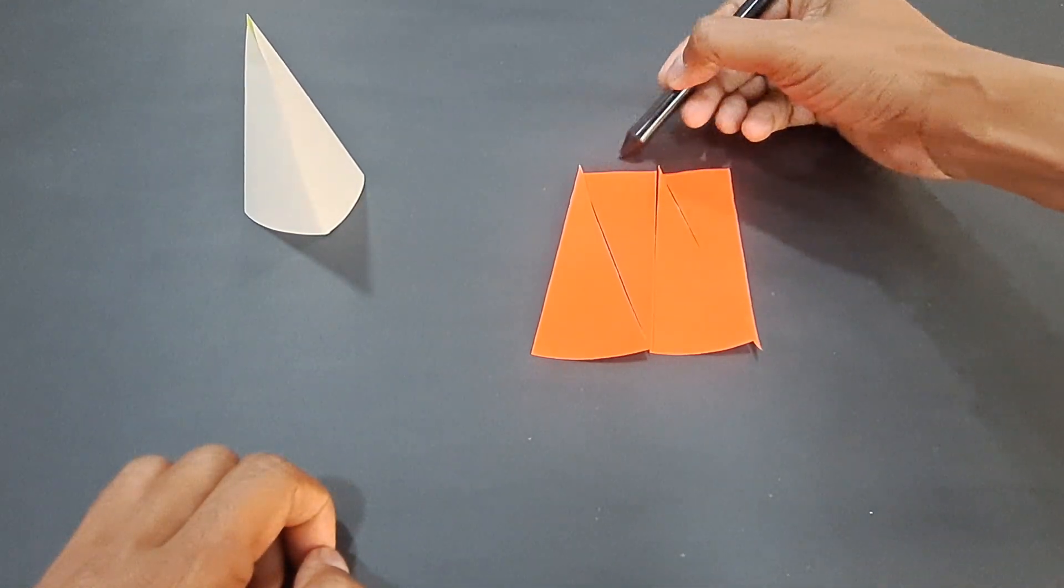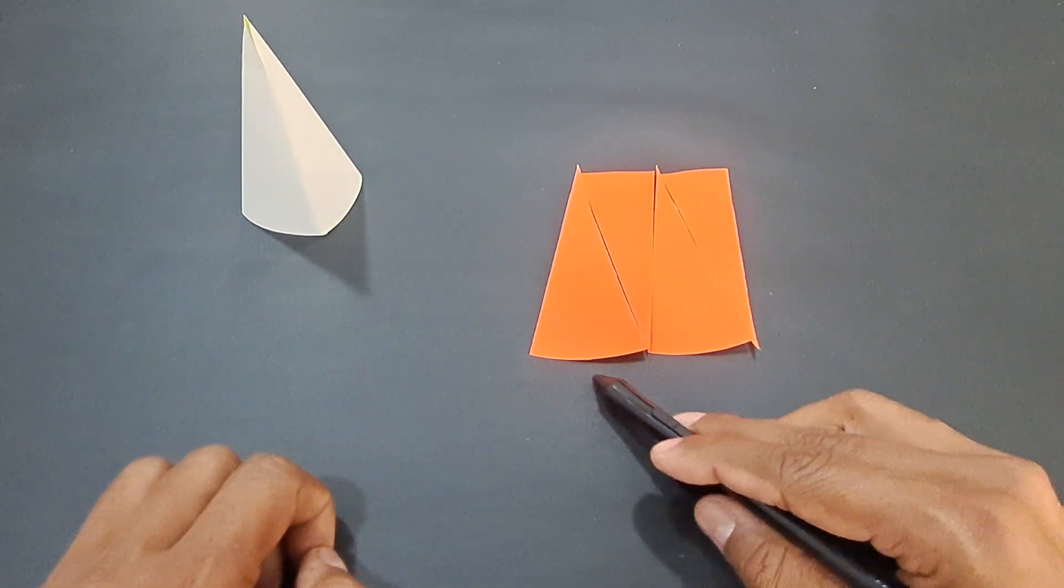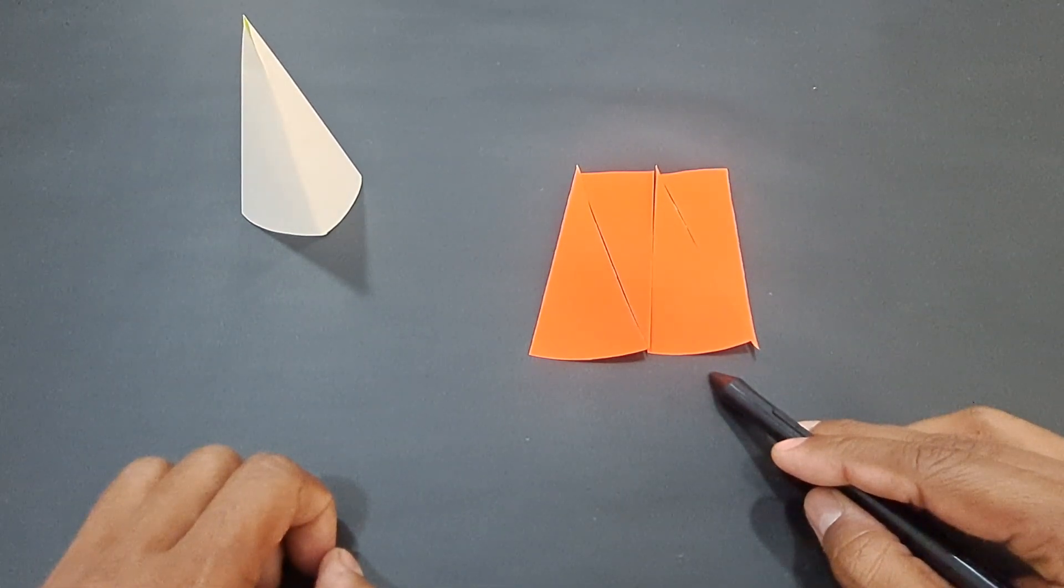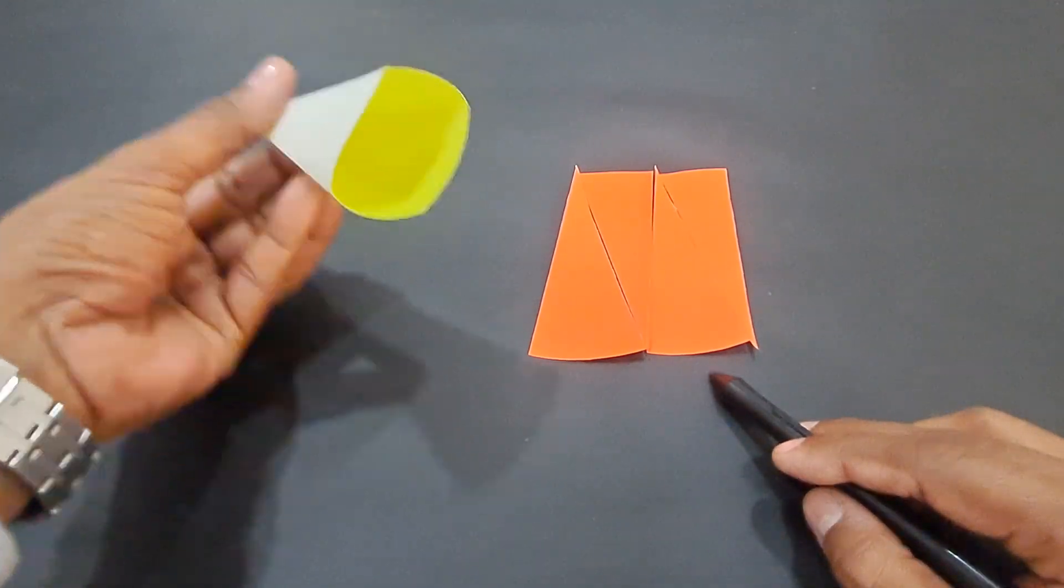The half of the circumference of the circle will be on the top and the other half will be at the base. So, if you consider the circumference of the base as 2πr,